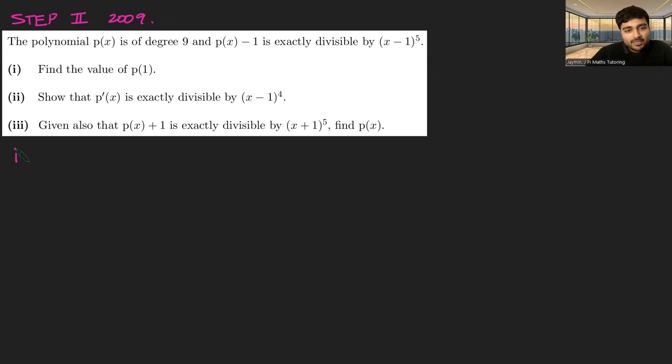Let's dive in. Part 1, we want to find the value of p(1). Well, we're told that p(x-1) is divisible by (x-1)^5, so it must be q(x) multiplied by (x-1)^5 for some polynomial q. And in fact, q would have degree 4 here. If I just add 1 to both sides, I get (x-1)^5 q(x) + 1.